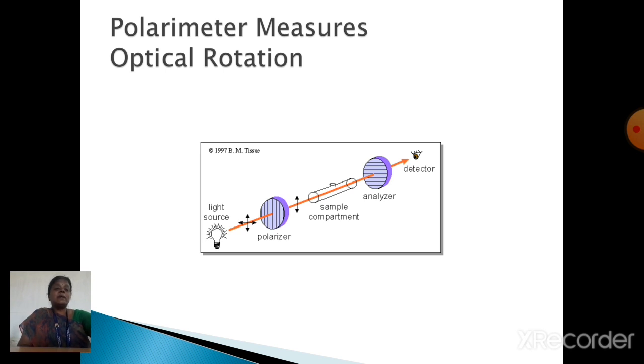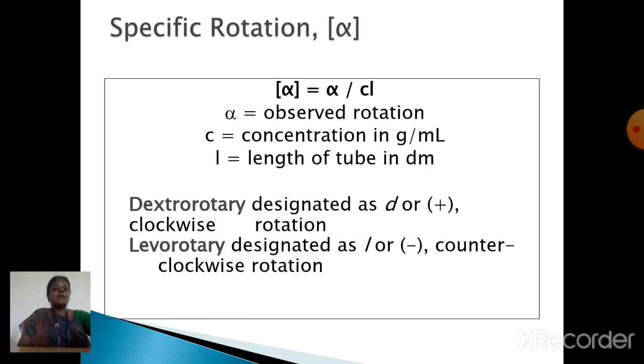By using this instrument, we measure the optical rotation. After measuring the optical rotation by using this formula that is alpha divided by C times L, we can calculate how much angle of rotation has happened. Here alpha is the observed rotation, C is the concentration and L is the length of the tube.